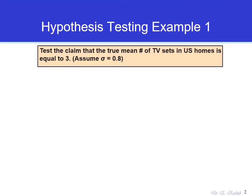Let's see an example for hypothesis testing regarding the average of the population. We're going back to the example regarding the claim about the average number of TV sets in US homes. The statement is to test the claim that the true average number of TV sets in US homes is equal to 3. Assume that the standard deviation of the population is known to be 0.8.